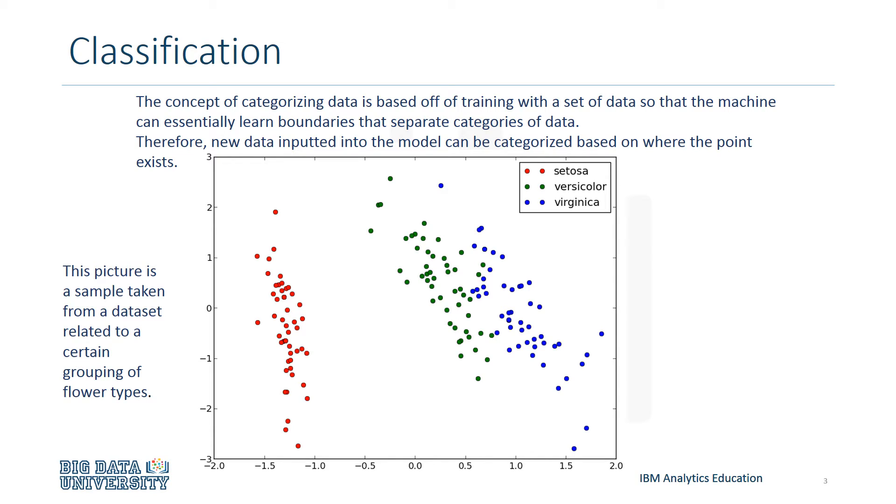Imagine that you were a machine learning model. Where would you put boundaries to classify this data? Please pause the video now and take a few moments to observe the data points here. Did what you come up with look something like this?